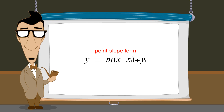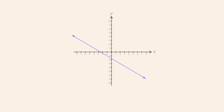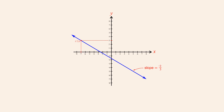Now let's try another example using this form. Once again, we are given the graph of a line but not its equation, and it is not clear from looking at the graph exactly where the line crosses the y-axis. We are told that the line passes through the point (-7, 3), and that the line's slope is negative two-thirds.